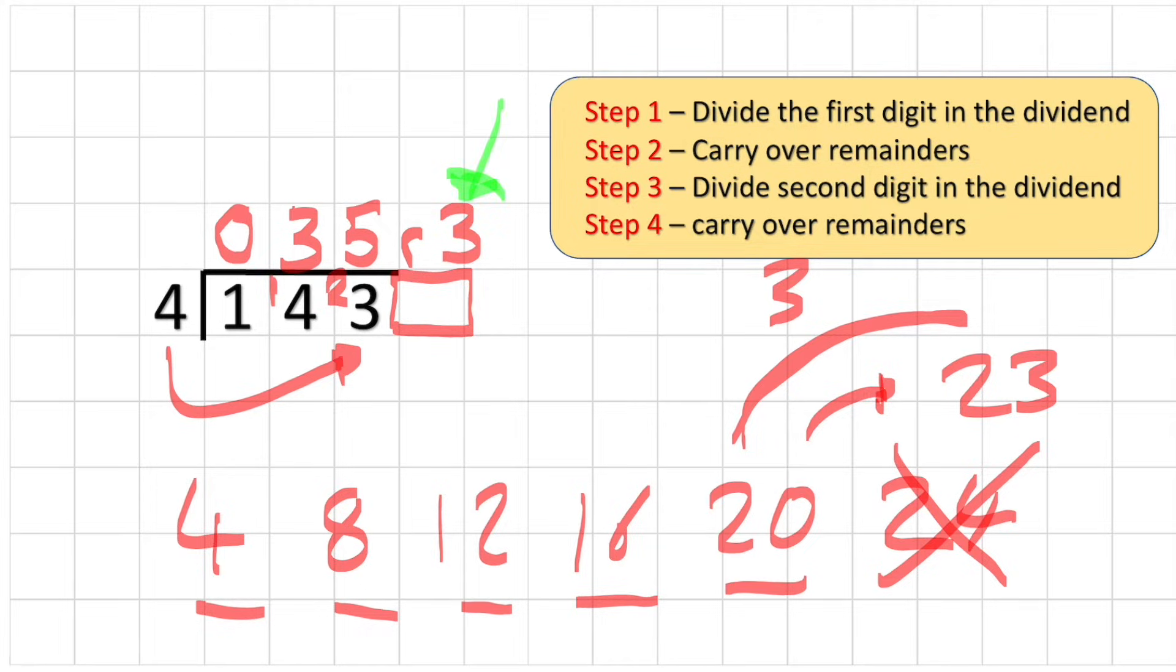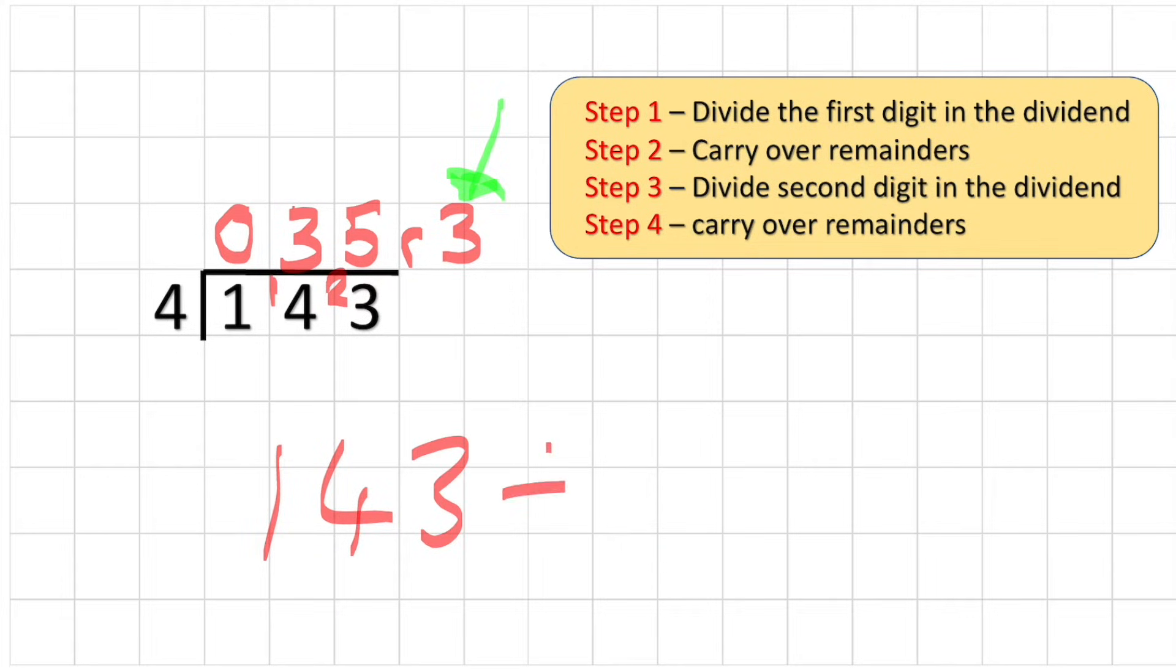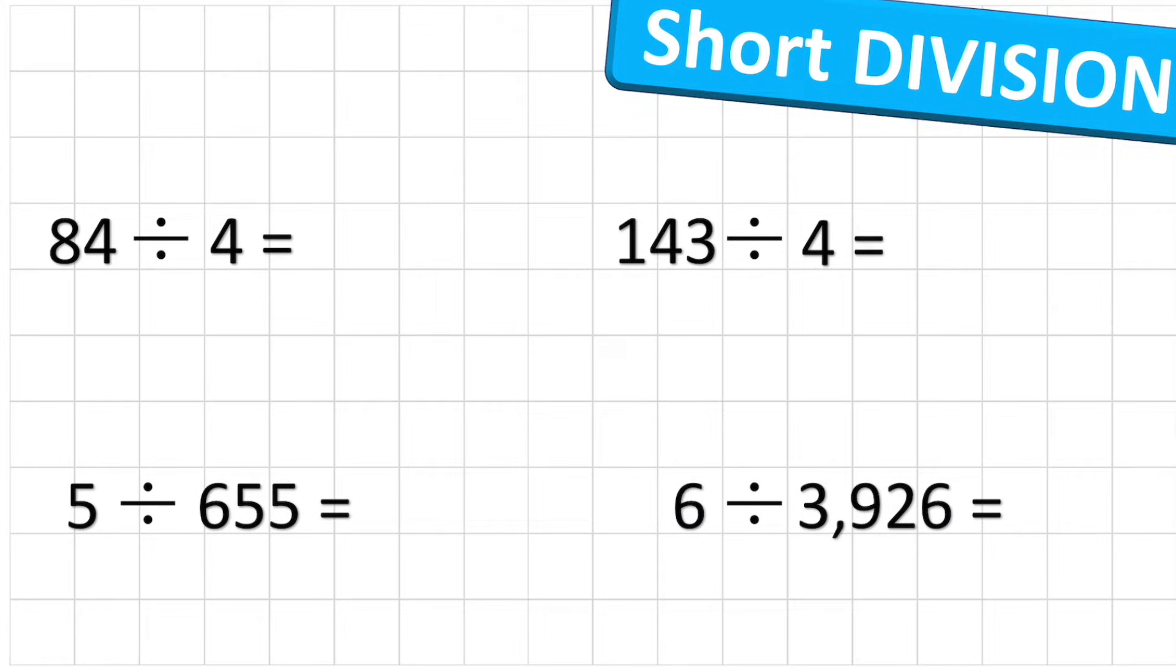And because I have no more columns here, I can just put it straight up into the answer row. So my answer to 143 divided by 4 equals 35, because remember I don't need to include this 0, it doesn't change the value. So 35 remainder 3. Good job.